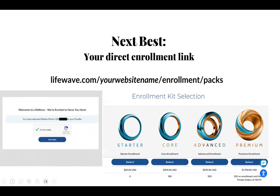The next way to enroll somebody is to send them your direct enrollment link: lifewave.com slash your website name slash enrollment slash packs. That's your direct enrollment link for brand partner. They'll first see a little verification page that just wants to make sure they're enrolling under you. They click I'm not a robot, click join now, and then they will be taken to the enrollment kit selections where they select the enrollment pack they want. This is a one-time purchase — you can only buy an enrollment pack one time. They choose that pack, fill in their information, and complete the order.